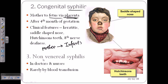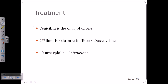The third type is non-venereal syphilis. It usually occurs in doctors or nurses, and rarely by blood transfusion. When healthcare workers are caring for patients, the infection can be transferred if they have any openings — wounds, scars, burns, or skin injuries — through which Treponema pallidum can easily enter. Since this is not caused by sexual transmission, it is called non-venereal syphilis.